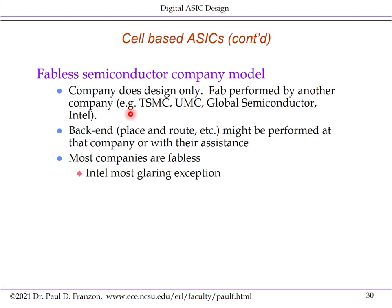There are exceptions — fabless companies. Intel and Samsung are notable examples of companies that own both fabs and the design process. But generally these are separated: companies like Qualcomm, Apple, and Google do the design and then have the fab make the masks and do the processing. Sometimes back-end components of the design flow, such as place and route, may be performed at the fab company or with their assistance.